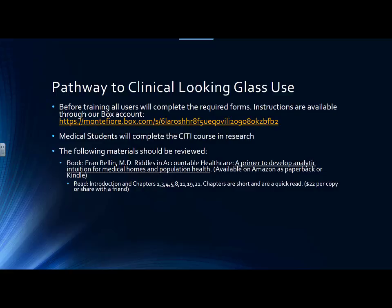Suggested reading: chapters 1, 3, 4, 5, 8, 11, 19, and 21. The chapters are short and a quick read. The book is $22 per copy, and you usually get the Kindle version free with it, so you can share a copy of the Kindle version with a friend.